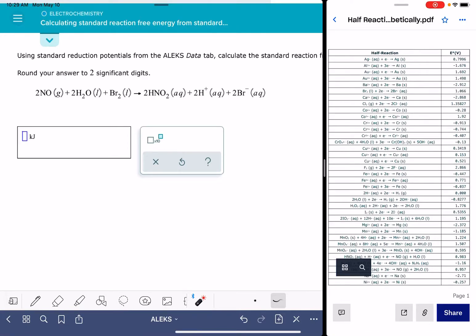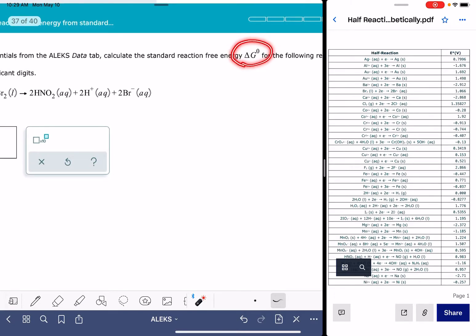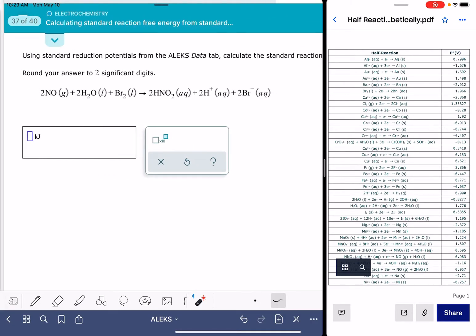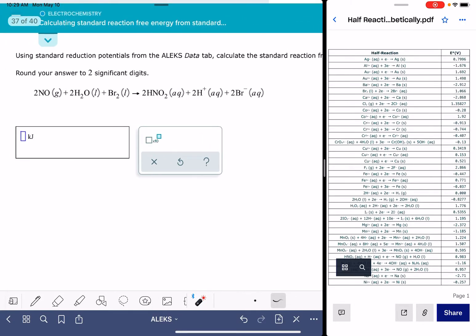In this video, I'm going to show you how to solve the ALEKS problem called Calculating Standard Reaction Free Energy from Standard Reduction Potential. This problem asks us to calculate the delta G for a redox reaction, and it's not providing us with any information other than the chemical equation.